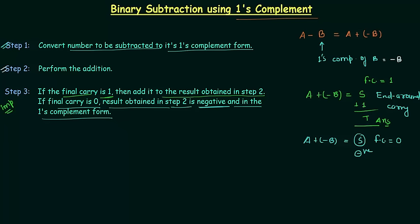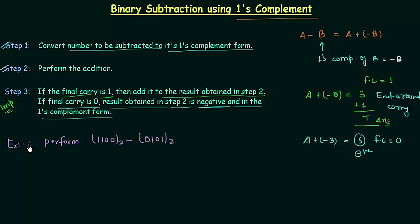Let's move to example number one. In this example we have to perform the subtraction where the first number is 1100 in binary and the second number is 0101. So a is equal to 1100 and b is equal to 0101. From step number one we have to convert the number to be subtracted — 0101 — to its one's complement form.